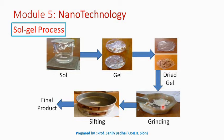This dried gel is ground to get a fine powder, and after that, further processing is done by sifting, and then we get a final product. This final product can be deposited on a substrate to form a film, or cast into a suitable container with a desired shape, or used to synthesize powders.